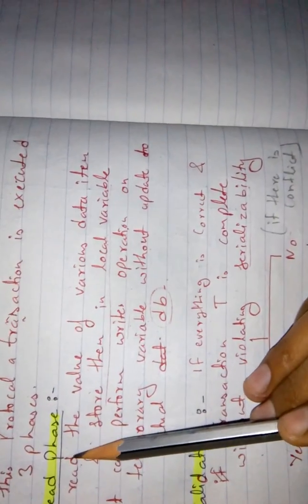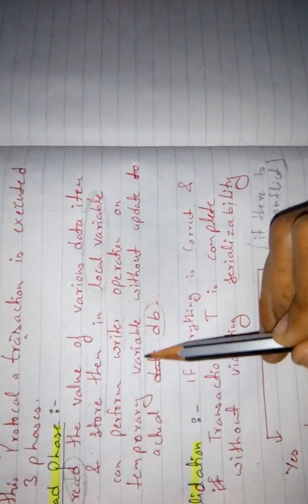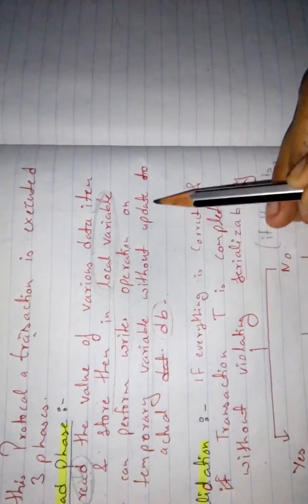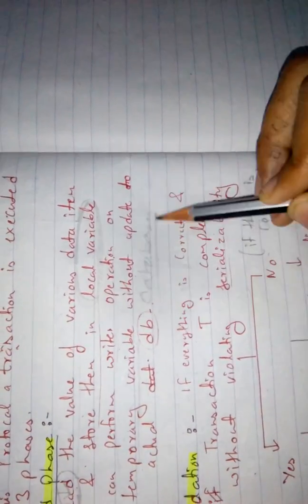The first phase is the read phase. In the read phase, we read the values — all the values that are committed. After reading, all the values are stored in a local variable. We can also perform write operations, but whether we read or write, we use a temporary local variable, not the actual database.